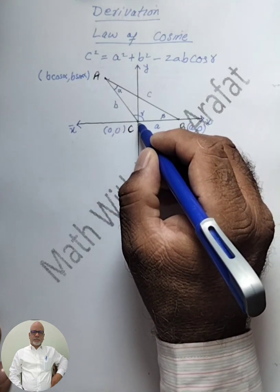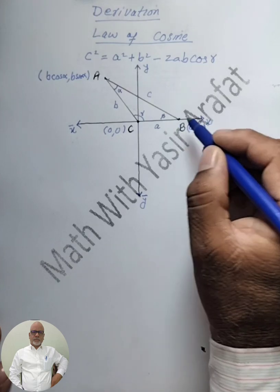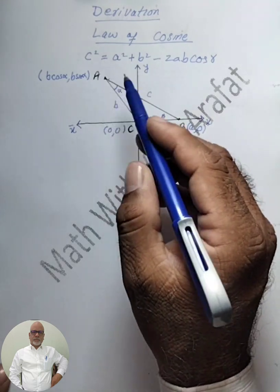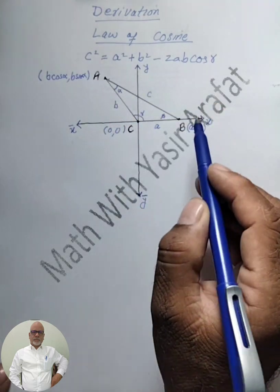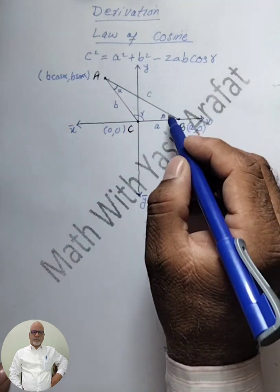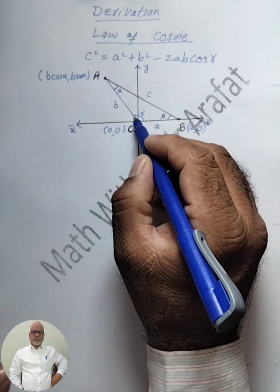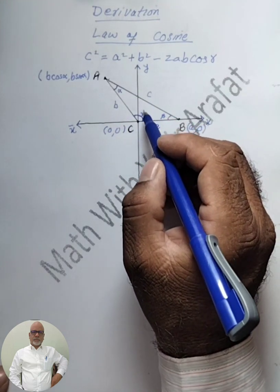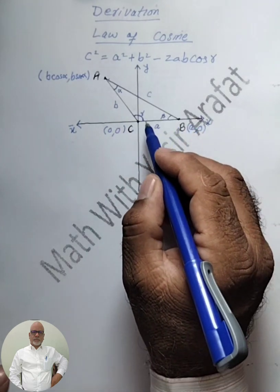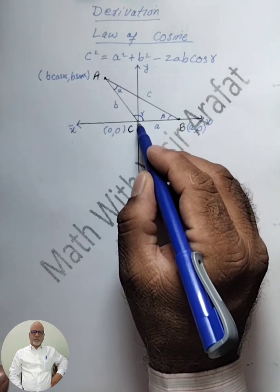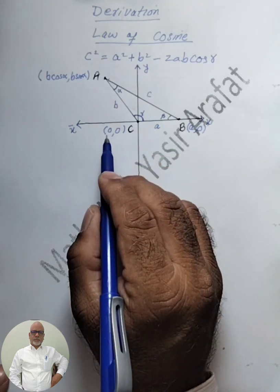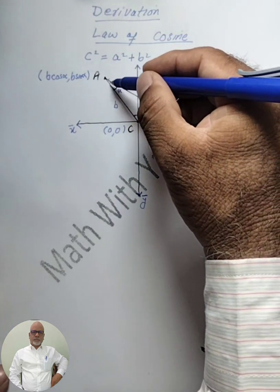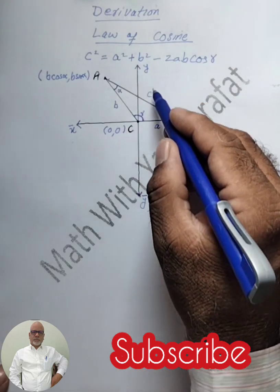Here we are going to consider a triangle ABC. It is placed with C at the origin, B on the x-axis, and A in between the x and y-axis. So here, side a is opposite angle alpha, side b is opposite angle beta, and side c is opposite angle gamma.